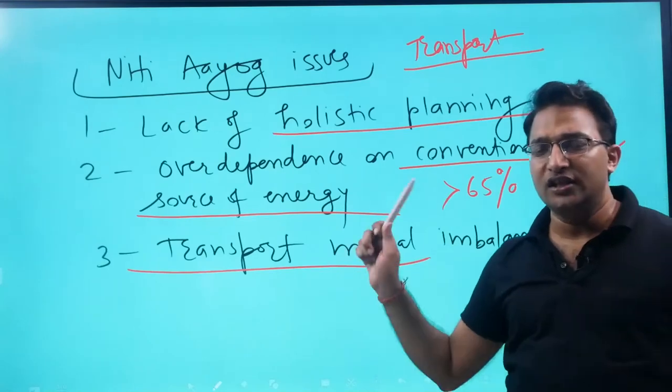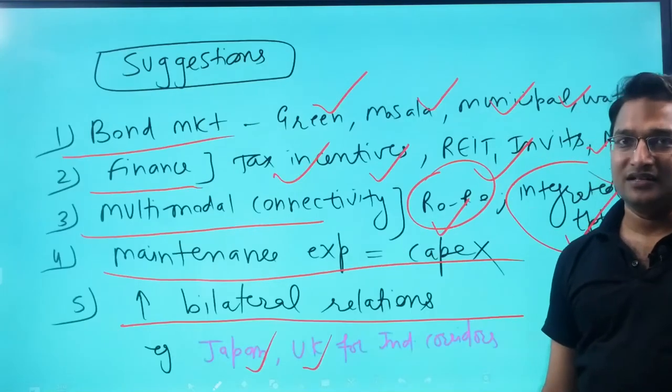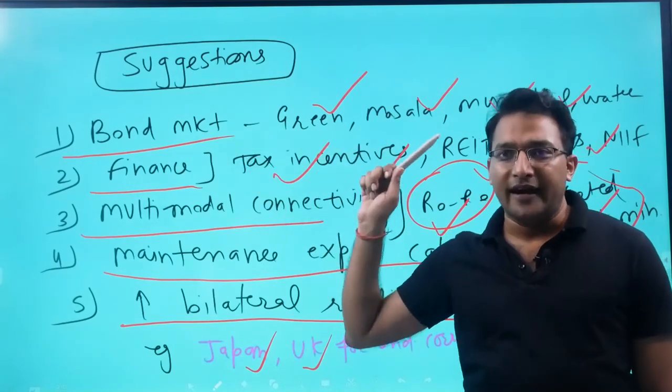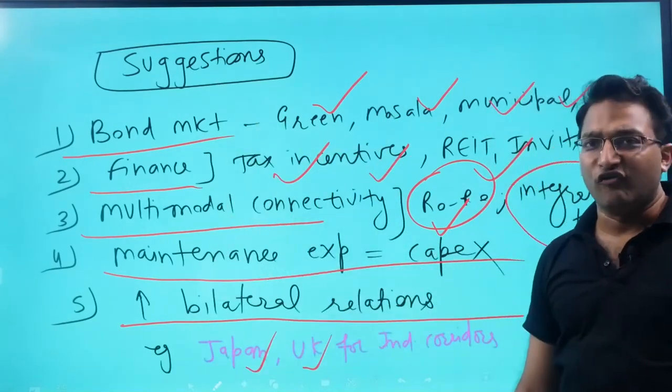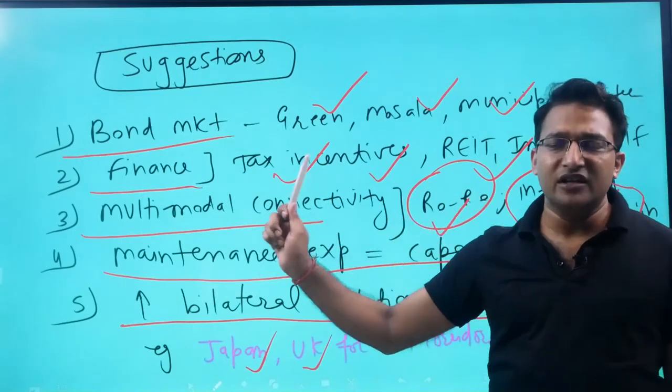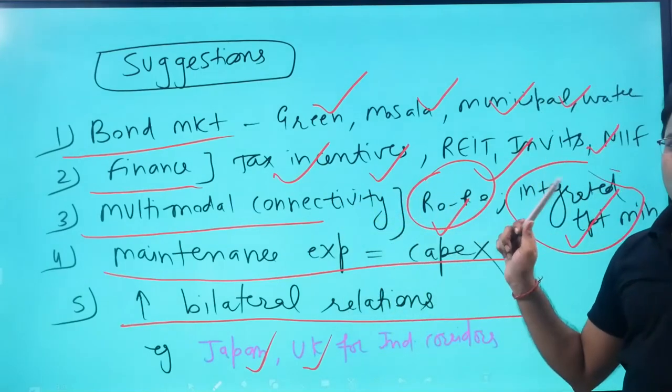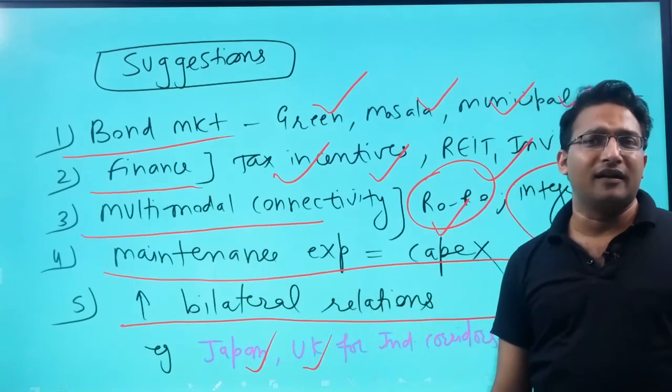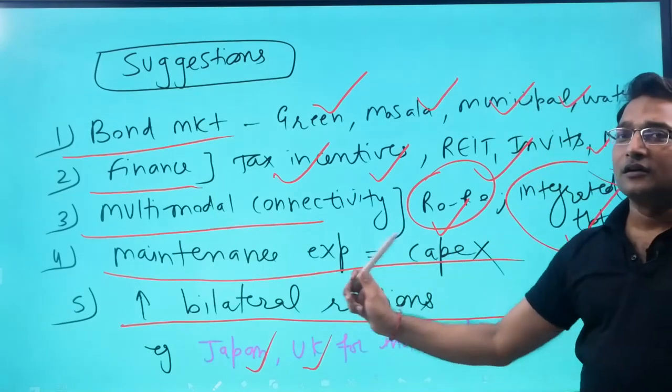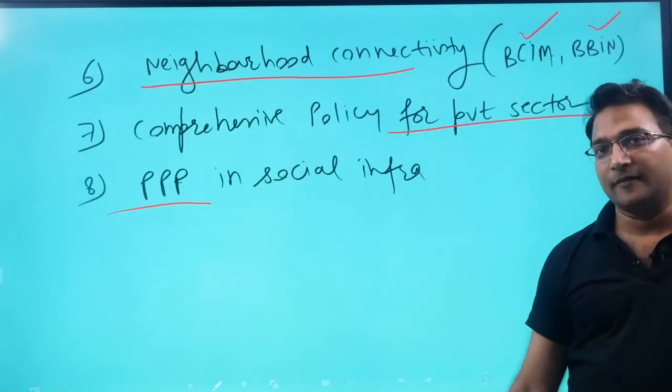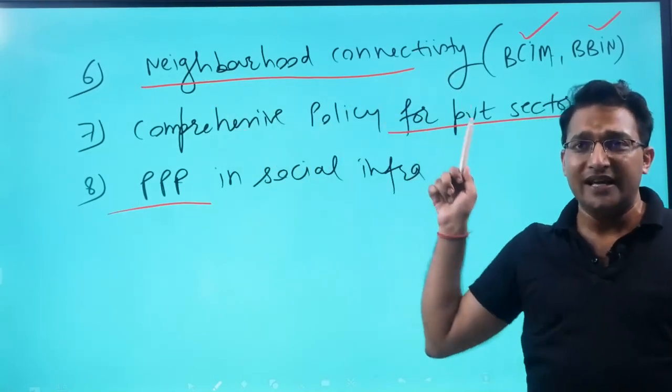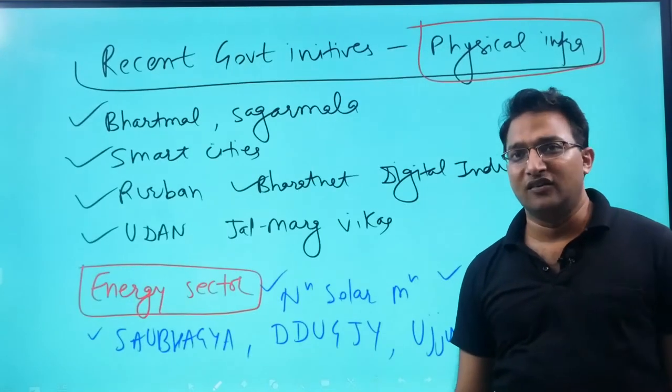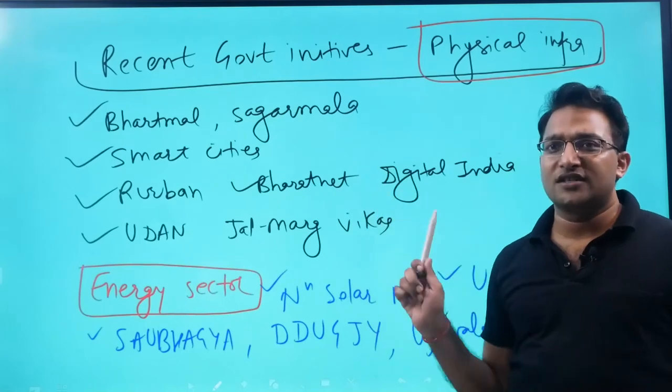Suggestions for financing include bond market and different kinds of funds, multimodal connectivity through RoRo, integrated transport ministry, classifying maintenance expenditure as capital expenditure, taking loans from Japan and UK, neighboring connectivity through BCIM and BBIM, comprehensive policy with the private sector, and PPP in social and physical infrastructure.